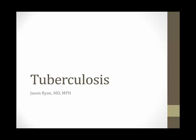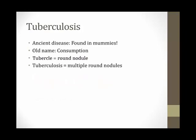Welcome to our module on tuberculosis. Tuberculosis is an ancient disease — they've found evidence of it in mummies. It had a great effect on civilization prior to the antibiotic era, affecting many people, especially in crowded cities. Many famous people over the centuries died from it. Its old name is consumption because patients lost weight. It's called tuberculosis because a tubercle is a round nodule, and in TB you have multiple round nodules.